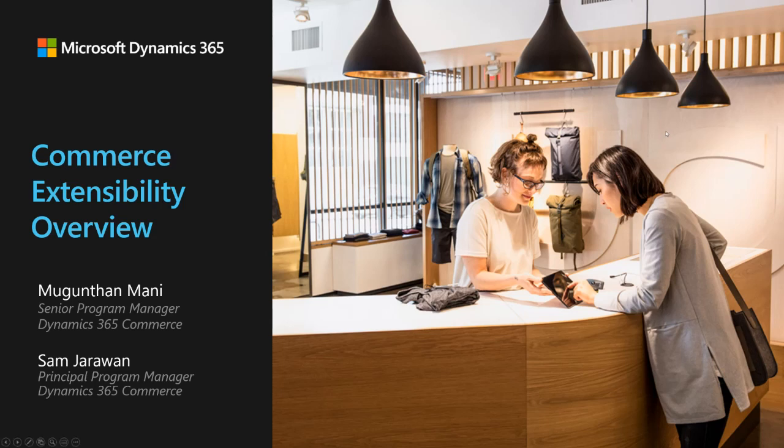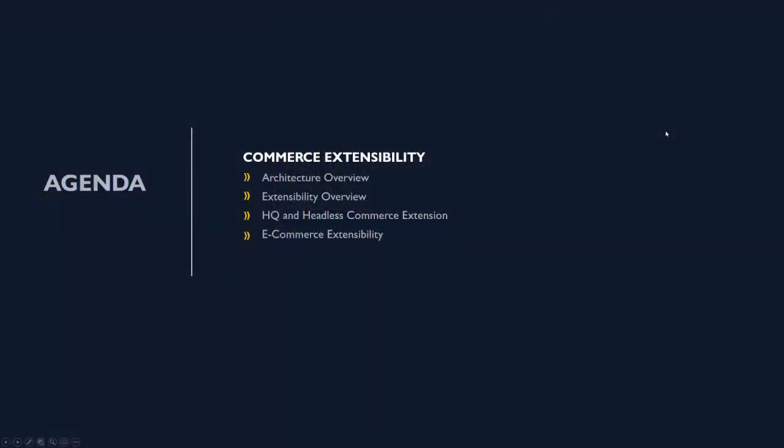I'll start off with a little agenda. First I will be giving you a brief architectural overview, then an extensibility overview to show you the extensible parts based off of the architecture diagram. Then Mugunthan will be covering the HQ and headless commerce extensibility section, and finally I will cover the e-commerce extensibility section at the end.